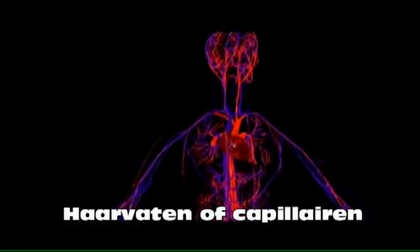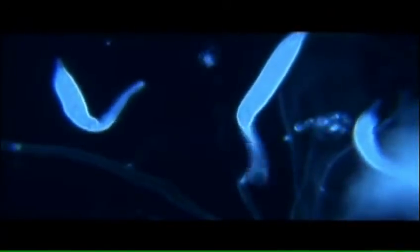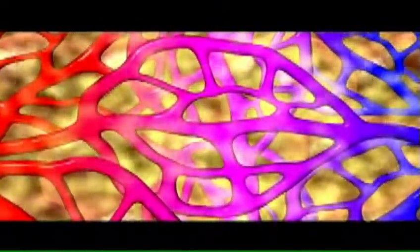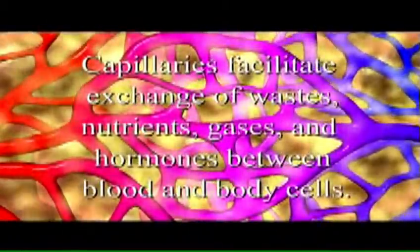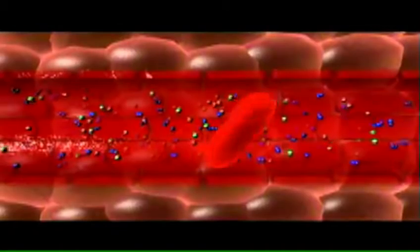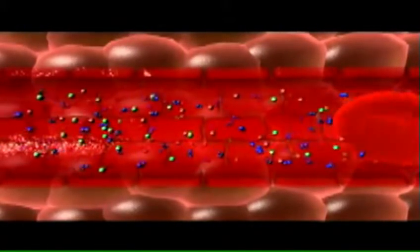Our circulatory system is designed to provide each of our cells with a type of diffusion exchange practiced by simple unicellular organisms living in aquatic environments. This exchange occurs at the level of the tiniest blood vessels, capillaries, where wastes, nutrients, gases, and hormones are exchanged between the blood and the body cells. With walls only a single cell thick, capillaries are well adapted to their role of exchange.